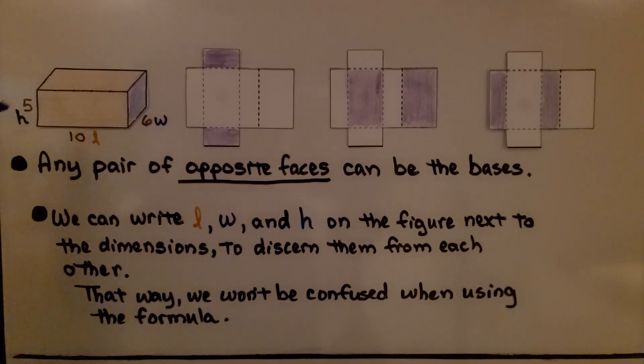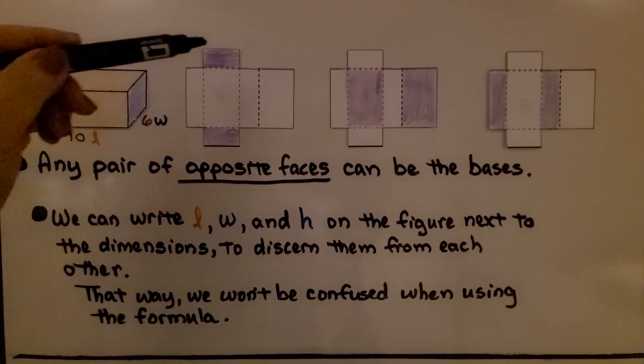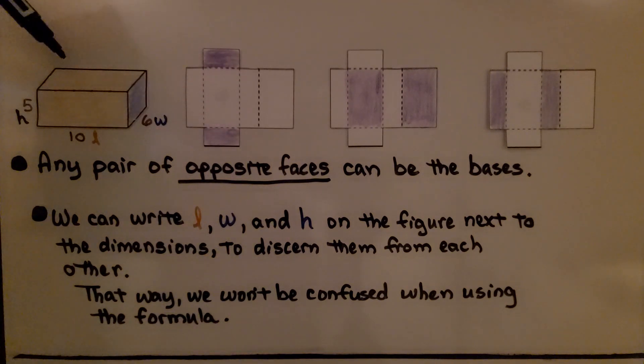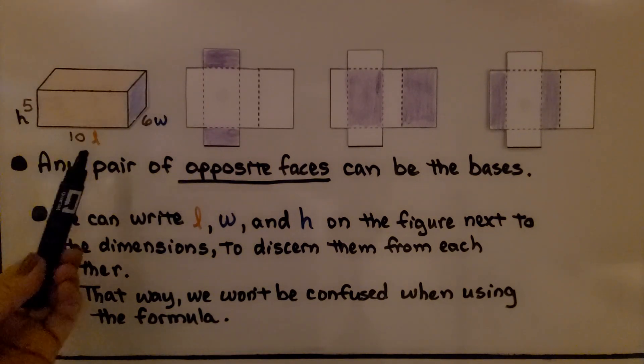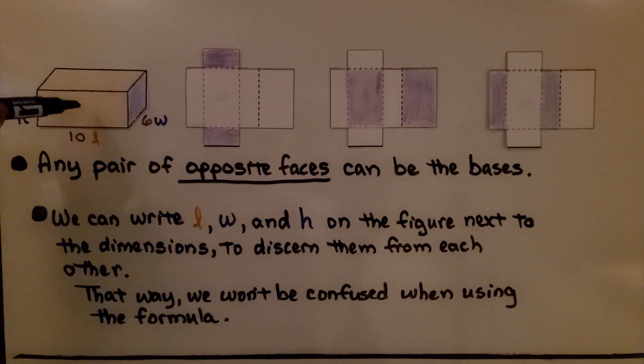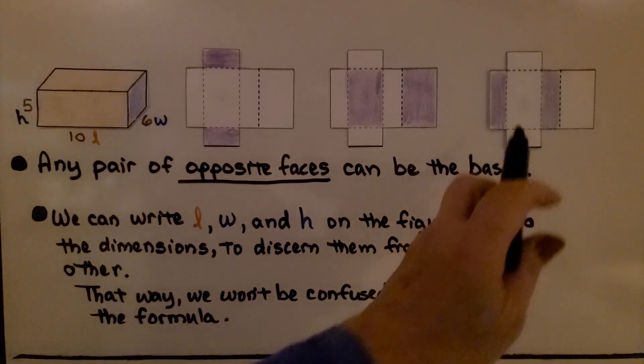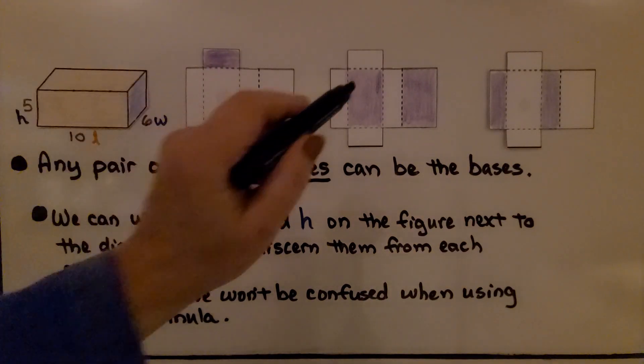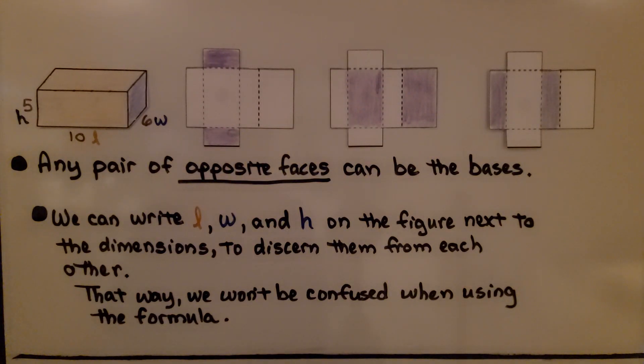Here we have a rectangular prism, a right rectangular prism. Any pair of opposite faces can be the bases. We can say this is a base and this side is a base. Here's its net. We could say that this top and the bottom are the base, or this side and the back side are bases. Any pair of opposite bases can be the bases.